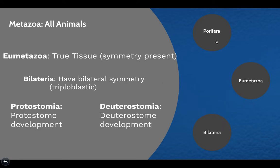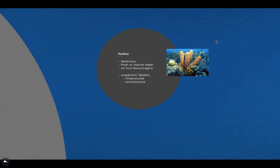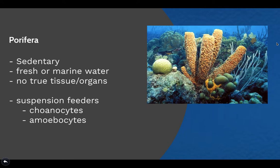Let's start with Porifera, which is part of the metazoan clade but not the eumetazoan clade. Porifera, or sponges, are organisms that don't have true tissues or organs. They are sedentary — they don't move around — and can be found in either fresh or marine water. These organisms are suspension feeders that use their coanocytes, or collar cells, which beat their flagella to create water currents.